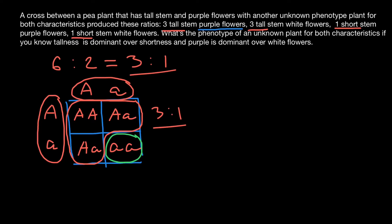For flower color, we have three purple, one purple, three white, and one white — so four purple and four white, a four to four ratio, which is the same as a one to one ratio. We know that purple is the dominant trait. We can get such a ratio if the known plant is heterozygous, with genotype capital B small b.